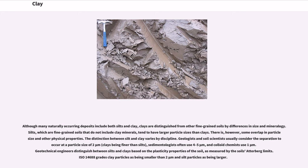The distinction between silt and clay varies by discipline. Geologists and soil scientists usually consider the separation to occur at a particle size of 2 micrometers, clays being finer than silts. Sedimentologists often use 4–5 μm, and colloid chemists use 1 μm. Geotechnical engineers distinguish between silts and clays based on the plasticity properties of the soil, as measured by the soil's Atterberg limits. ISO 14,688 grades clay particles as being smaller than 2 μm and silt particles as being larger.